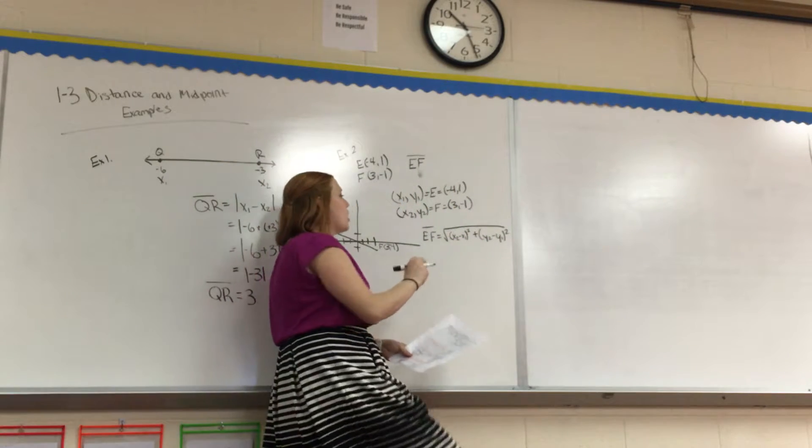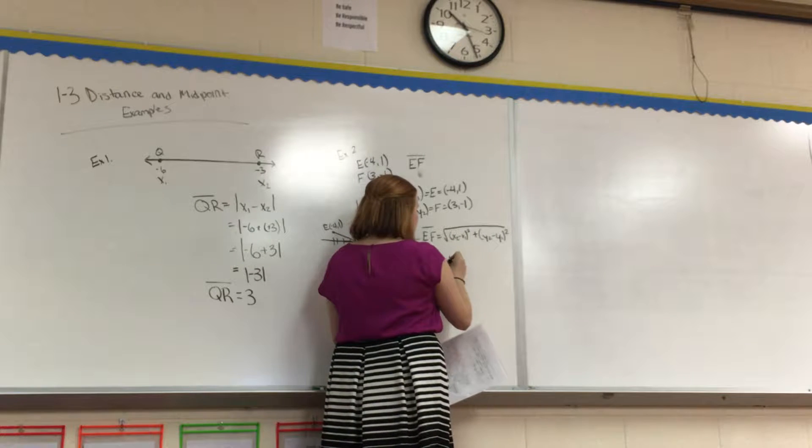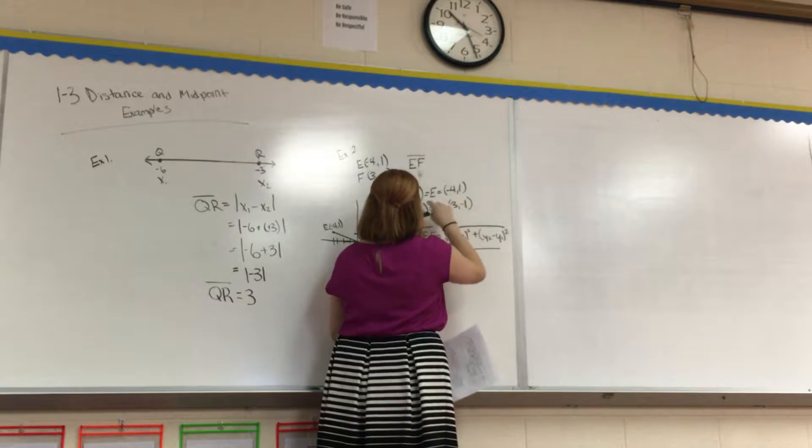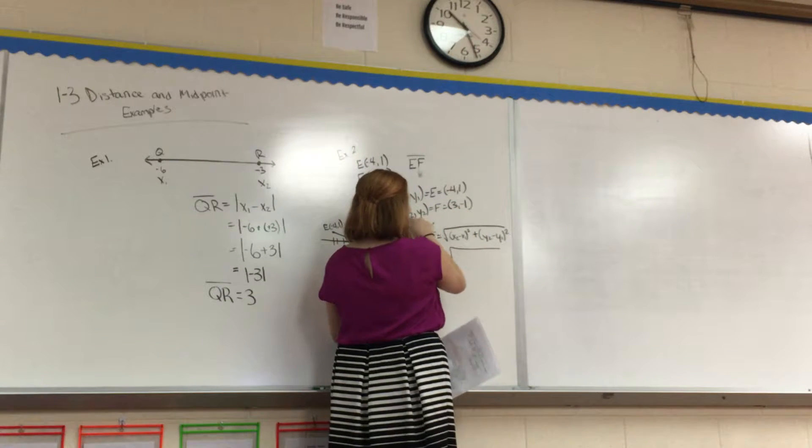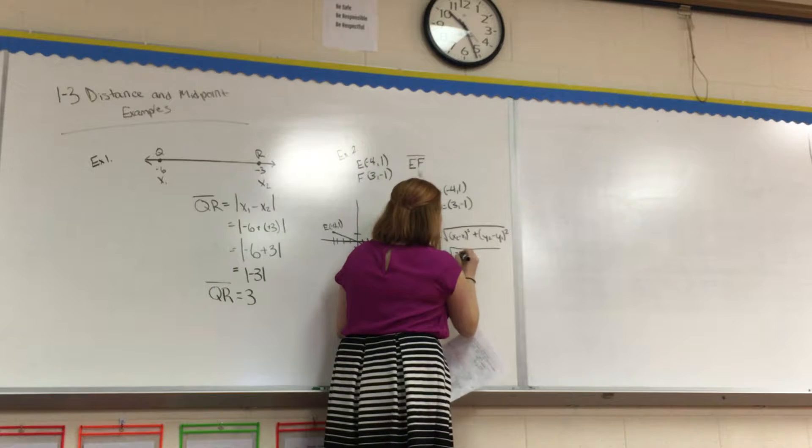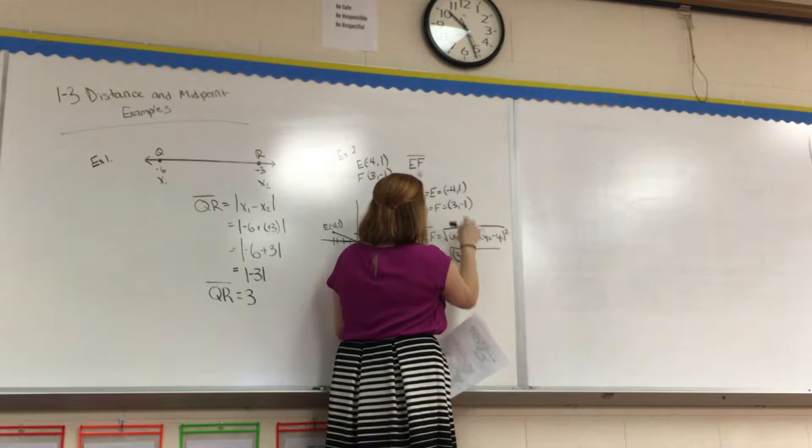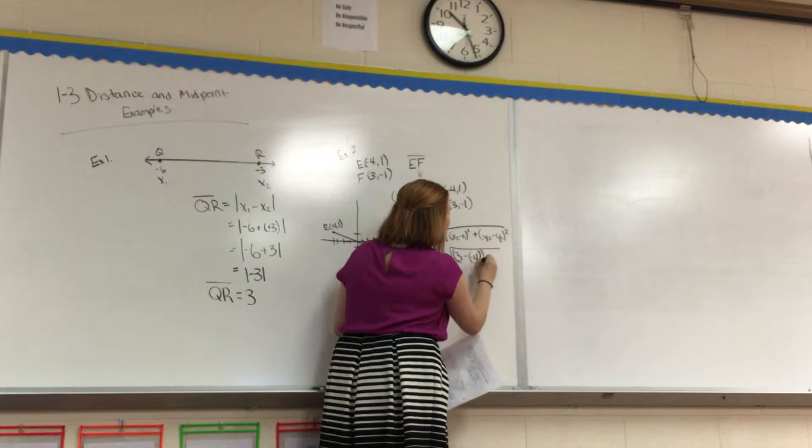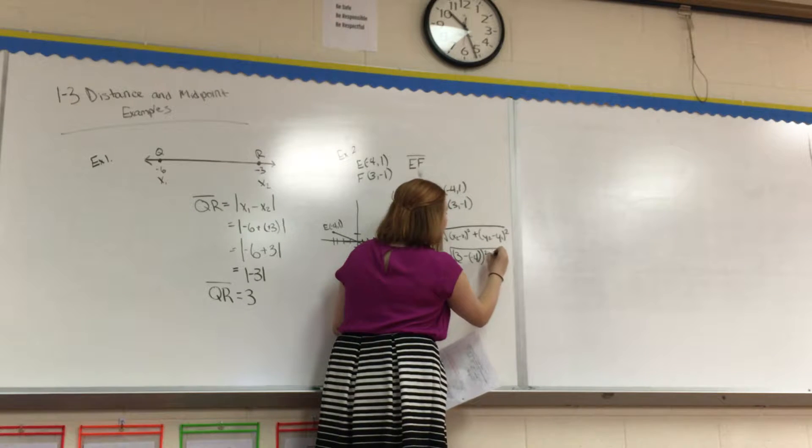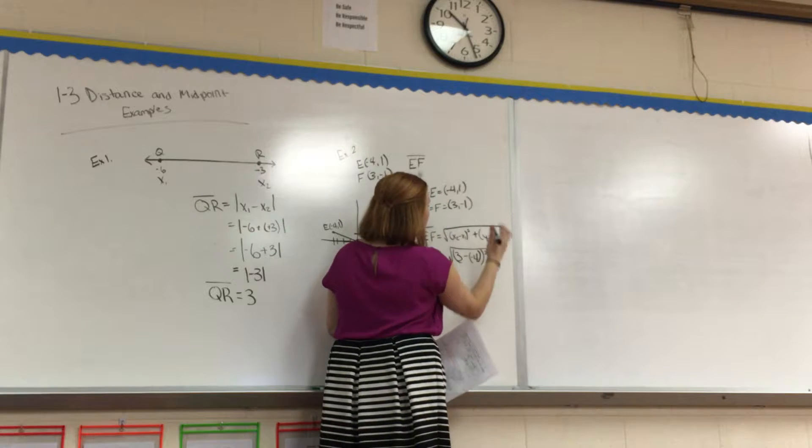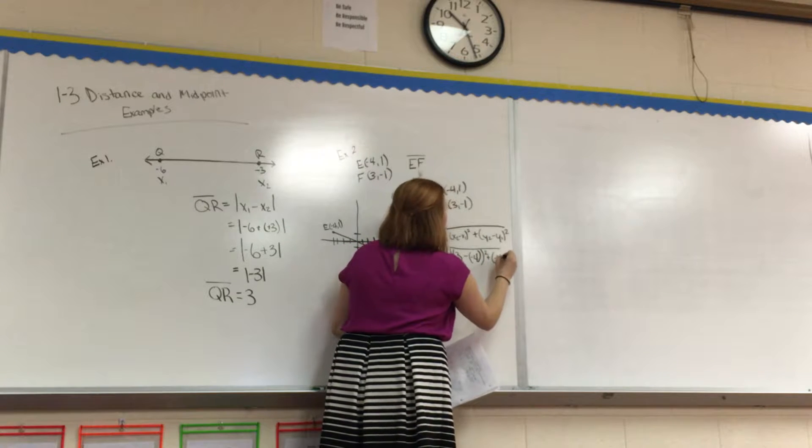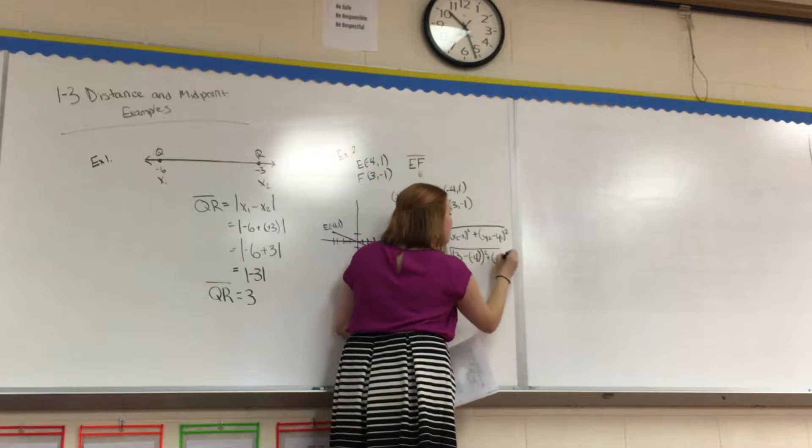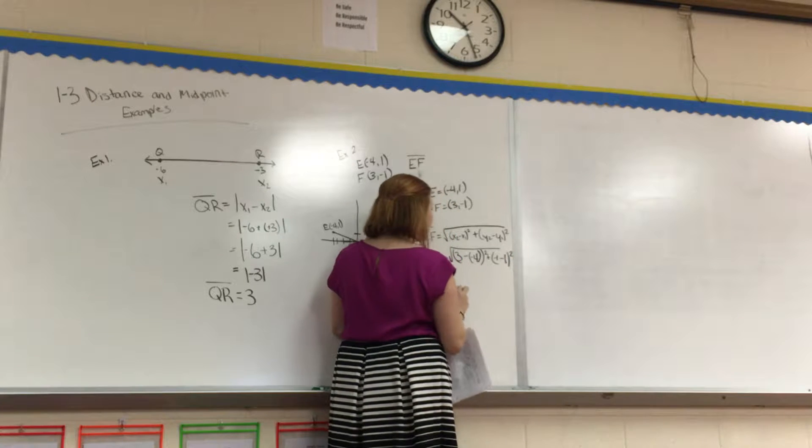So now we just need to plug and chug. So what is X2? X2 is 3, 3 minus X1, negative 4 squared plus Y2, negative 1 minus Y1, 1 squared.